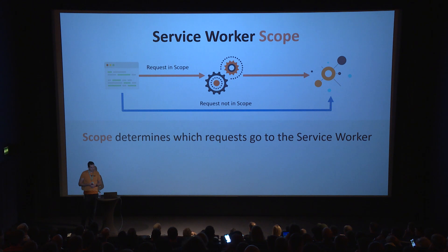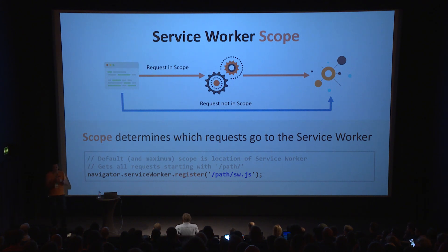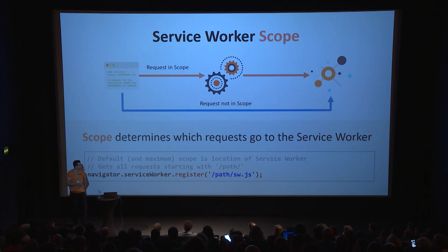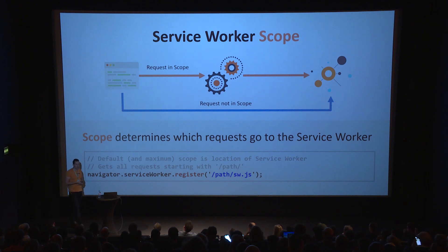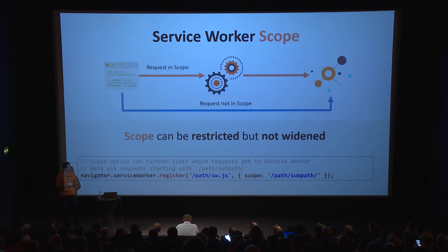A very important and often misunderstood concept of service workers is scope, because scope determines which requests a service worker can see. The default scope is the top-level path under which it was included — so if you include it at /path/sw.js, the scope will be /path, and you can only handle requests starting with /path. Anything out of scope bypasses the service worker entirely. You can always limit scope by passing a parameter to make it smaller, but you can never expand scope. If your service worker sits at /path/sw.js, you can never handle the scope of the top-level.